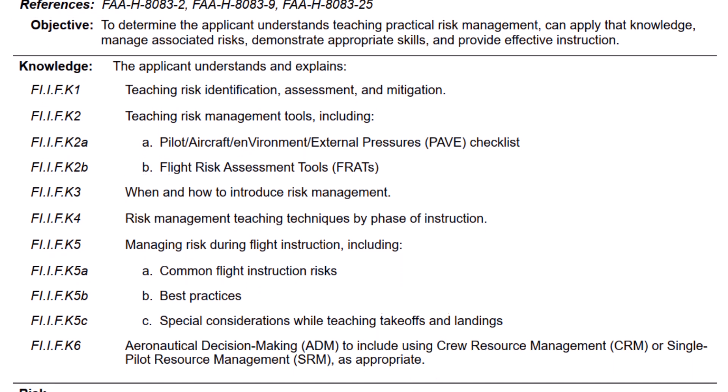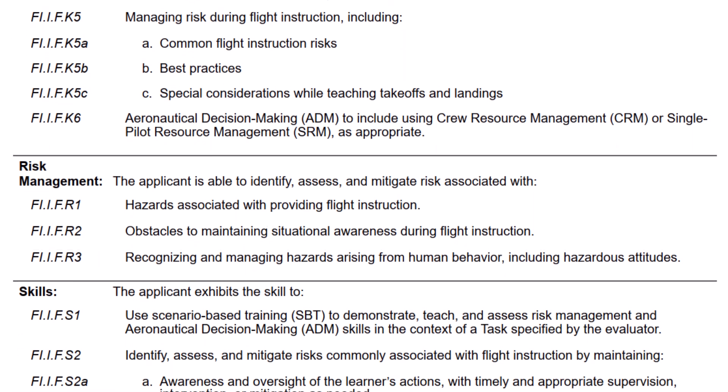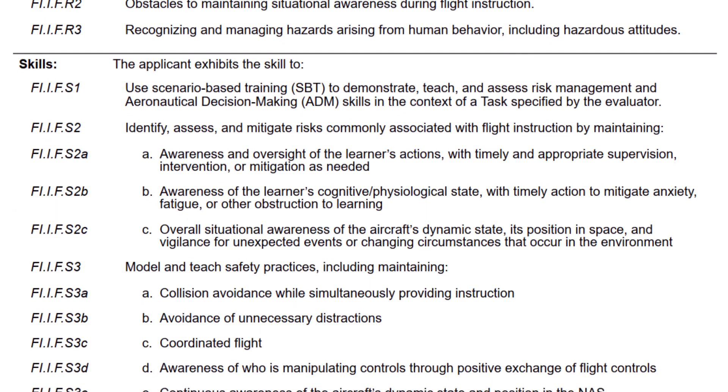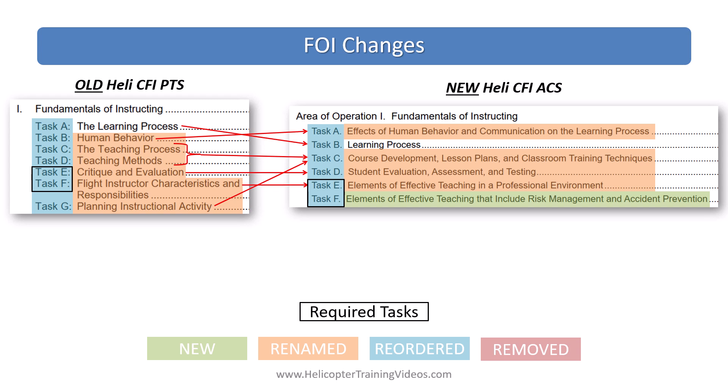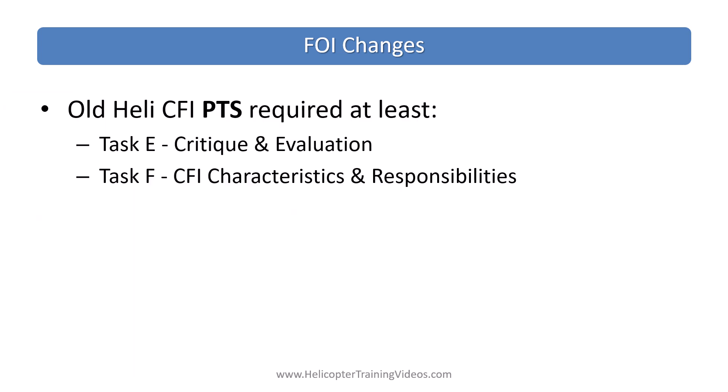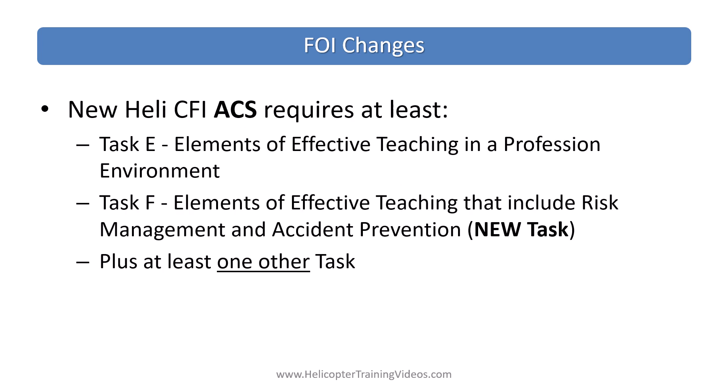There's a lot going on with that new task that you need to be aware of and able to teach through and explain. The required tasks have also changed. On the old helicopter PTS you were required to do at least Task E (critique and evaluation) and Task F (CFI characteristics and responsibilities). In the new ACS, the required tasks are Task E — elements of effective teaching in a professional environment — and Task F — elements of effective teaching that include risk management and accident prevention — plus at least one other task, so now you need to do at least three tasks under the FOI area of operation.